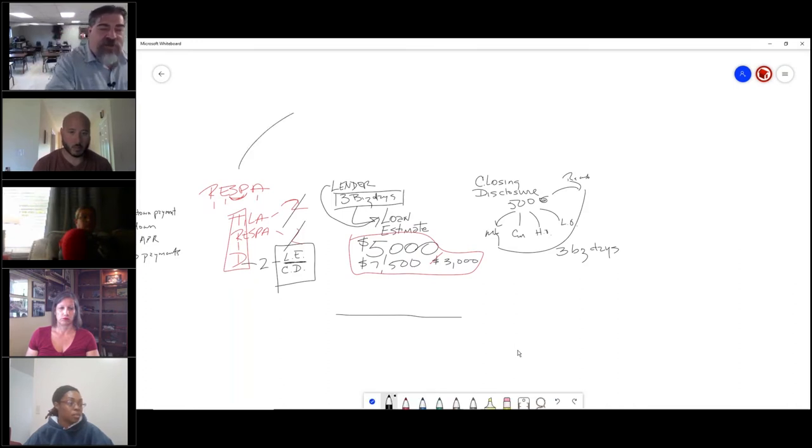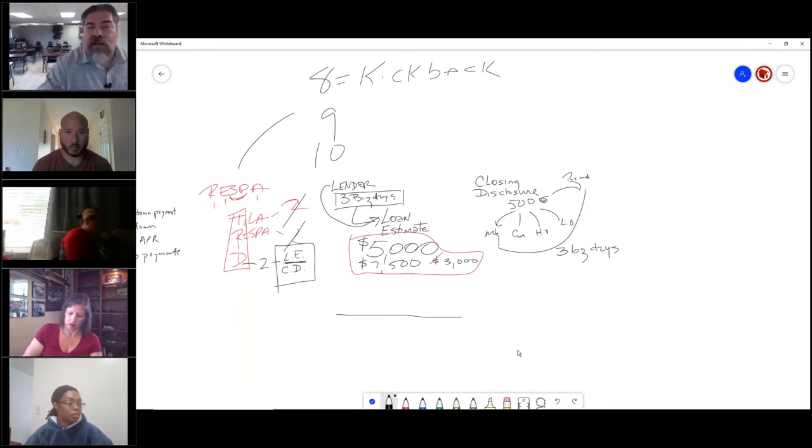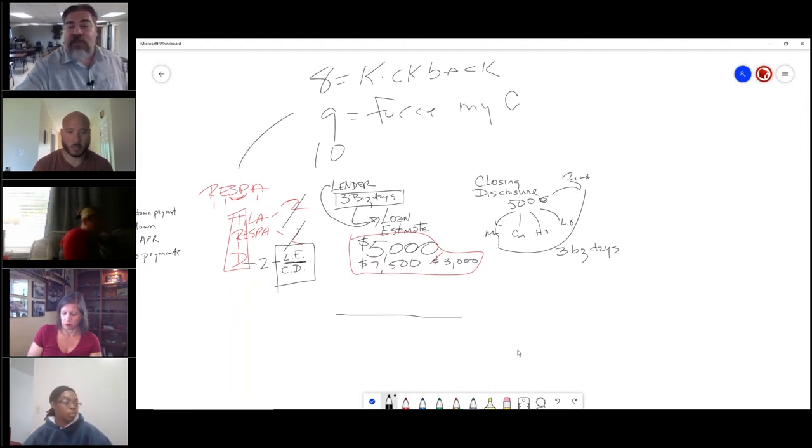In RESPA there are three sections that we need to talk about. Section 8 deals with no kickbacks - you cannot pay for a lead. You can't pay your mortgage broker to give you a buyer, you can't pay a title company person - there's no kickbacks. Section 9 says I cannot force you to use my companies. If the seller says I want to go to Chicago Title, the buyer can say I don't want to do that. I want to go somewhere else because section 9 says you can't force me to buy from your company.